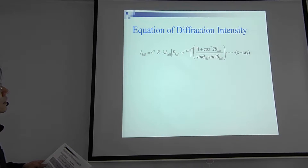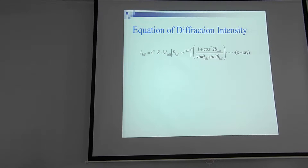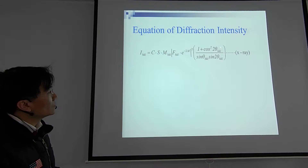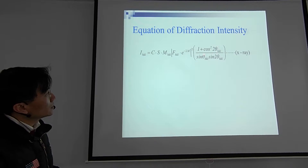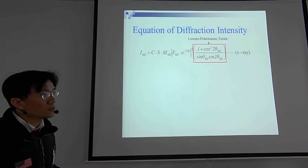When we make a derivation and when we utilize X-ray as the light source, there is one more term you need to take into consideration — there would be a product factor here. You will see that there is one extra term, which is one class for sine squared. If we take into consideration all of these terms, we call that the Lorentz polarization factor, which is angle-dependent.